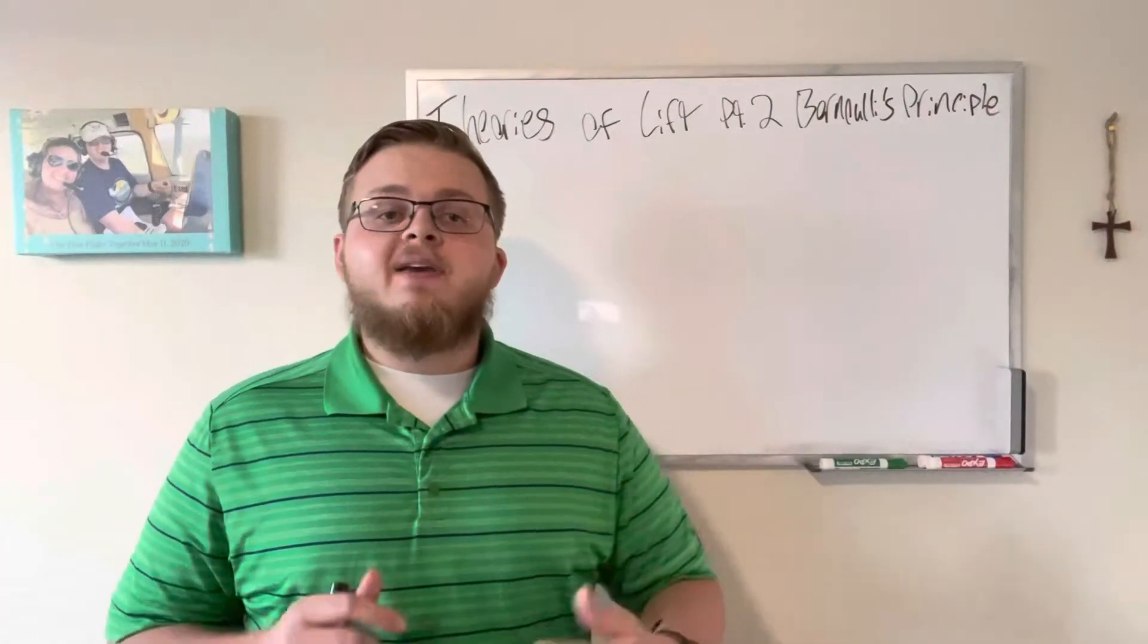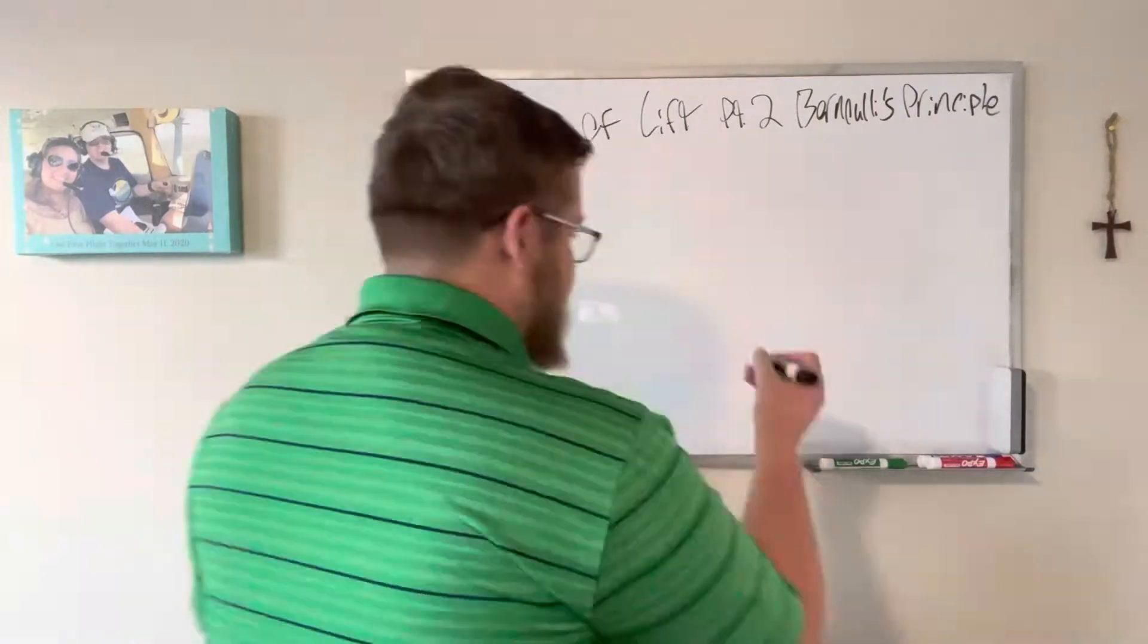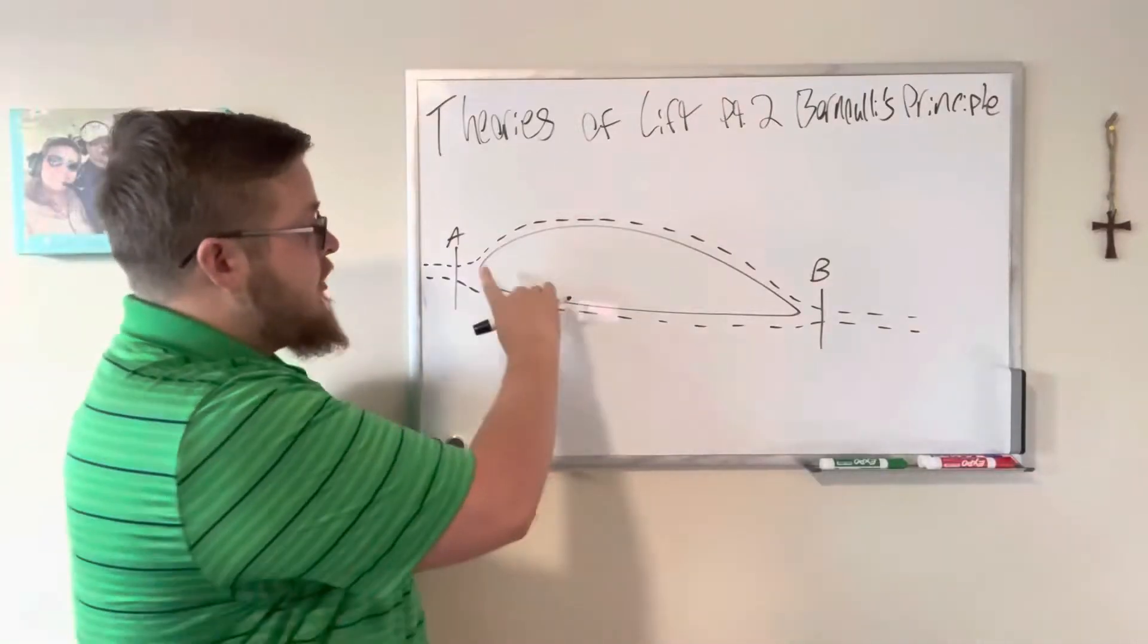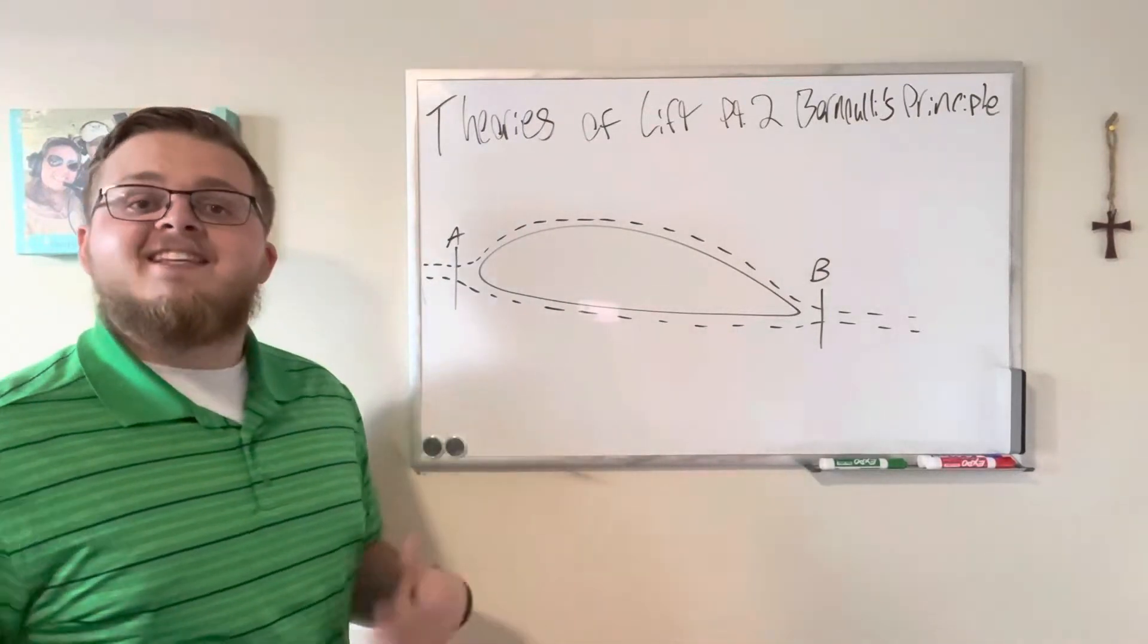Bernoulli's principle states that the pressure of moving air or fluid changes with its velocity. As you can see, the top of the wing is more curved than the bottom of the wing. This curvature is known as camber.